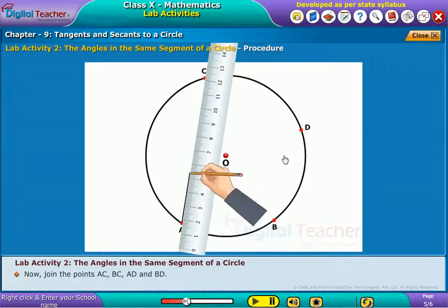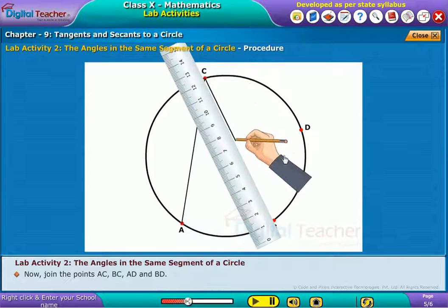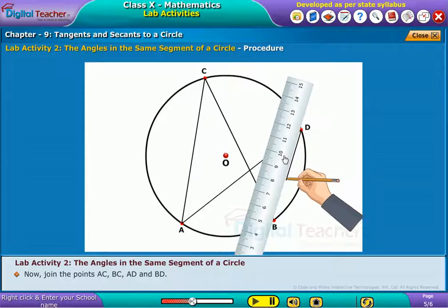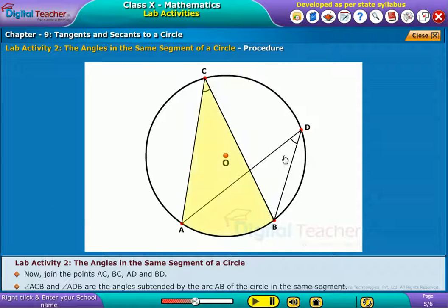Now join the points AC, BC, AD and BD. Angle ACB and angle ADB are the angles subtended by the arc AB of the circle in the same segment.